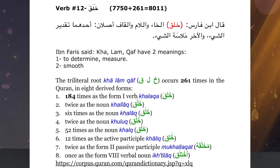With regards to where we are now, we find that these three root letters, or trilateral roots, occur 261 times as per Corpus Quran. Adding that to the previous number, we arrive at 8,011 words in the Qur'an, including khalaqa of today.